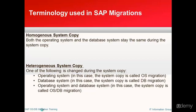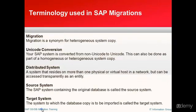In a heterogeneous system copy, one of the components changes. If we change the operating system, we call it an OS migration. If we change the database, we call it a database migration. If we change both the operating system and the database, the system copy is called an OSDB migration. So migration is essentially a synonym for heterogeneous system copy.